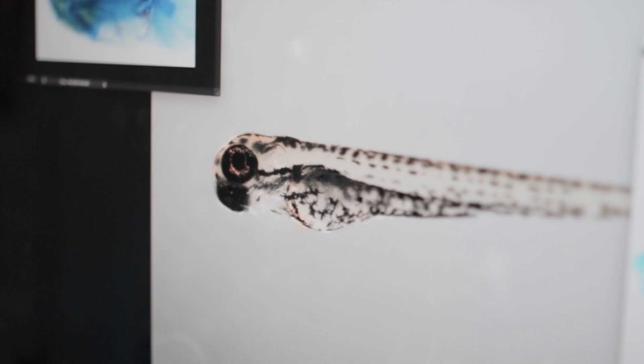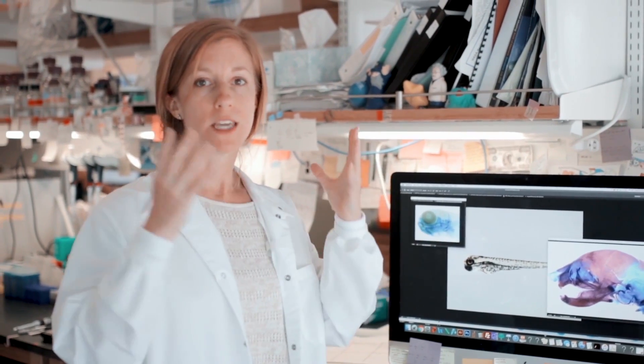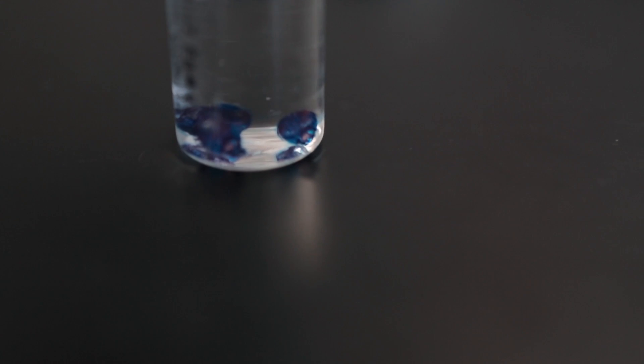I'm looking at the progenitor cells that are capable of giving rise to different skeletal tissues in order to study the signals that tell them to become bone or cartilage in different parts of the embryonic head at different times in order to build a fully functioning skull.